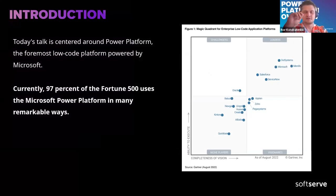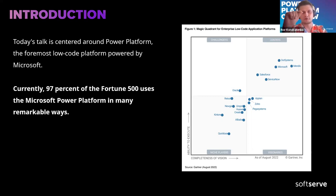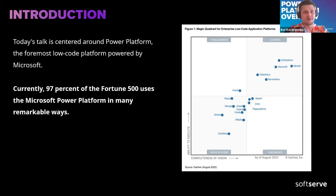It's pretty fascinating working with this platform. A couple of interesting facts: Gartner nominates this platform as a leader in low-code enterprise solutions. And one fascinating fact — almost 87% of Fortune 500 companies, the biggest companies on the planet, are using Power Platform. Just imagine the scale — it's a really interesting fact.